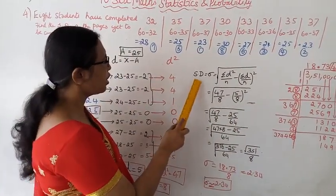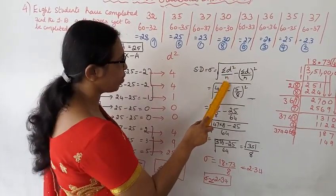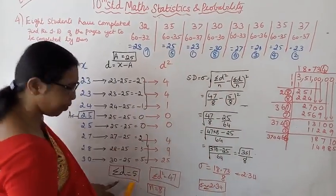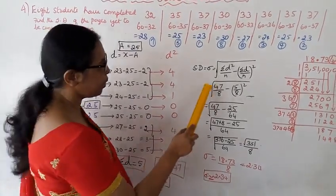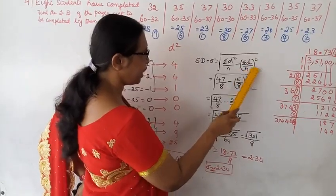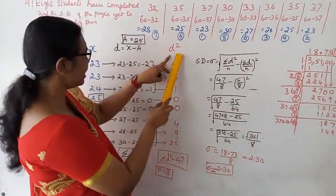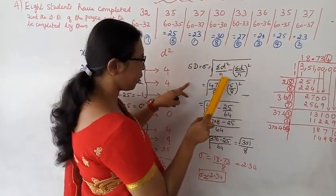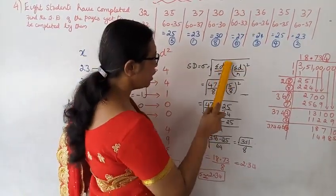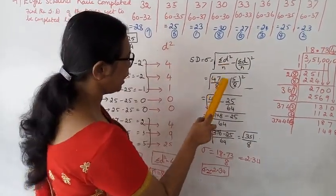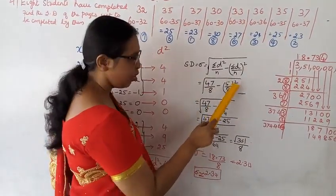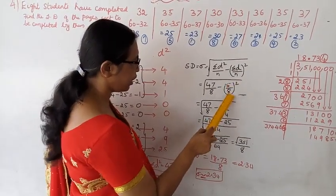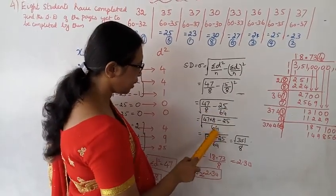Applying the formula: sigma equal to root of sigma d squared by n minus sigma d by n the whole square. Substituting: sigma d squared = 47, n = 8, sigma d = 5. So sigma = root of 47 by 8 minus 5 by 8 the whole square. That is root of 47 by 8 minus 25 by 64.